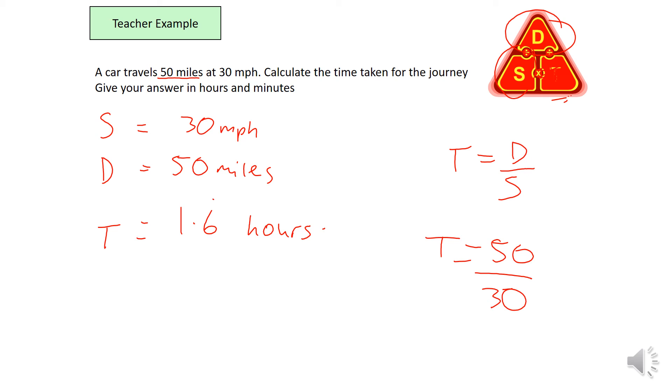So to convert that into hours and minutes, I have 1 hour and I need to multiply the 0.666 by 60. That gives me 1 hour and 40 minutes.